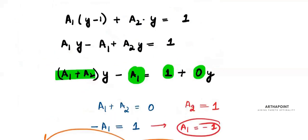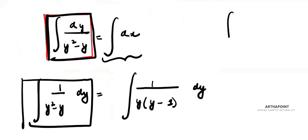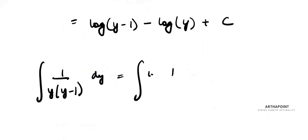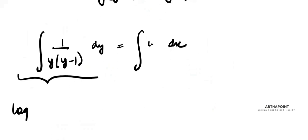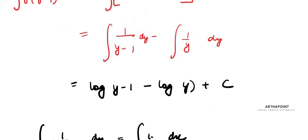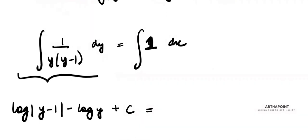On the right-hand side, the integration of 1 dx is simply x. So after integrating both sides, we get log|y-1| - log|y| + c = x. Remember, whenever you integrate and get a log, it is always in absolute values.